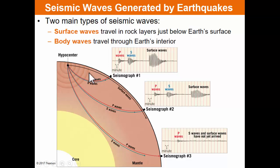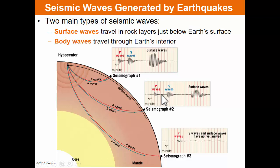At a seismograph 4,000 miles from the epicenter, the P wave arrives first, then the S wave, then the surface wave. As you extend farther from the epicenter, it takes longer for all waves to arrive, and the time lag between the P wave, S wave, and surface wave increases. The amplitude of the waves also decreases with distance. There are two primary types of body waves: primary or P waves and secondary or S waves, with very important differences between them.